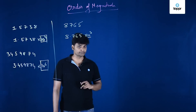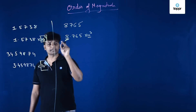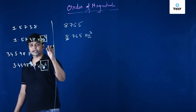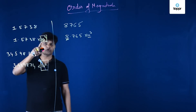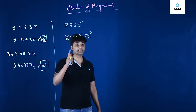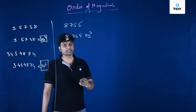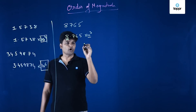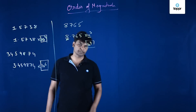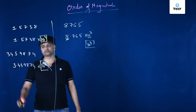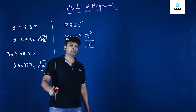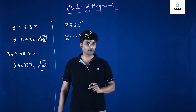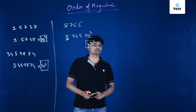If your answer is 10^3, then it is wrong. Why? Because we need to look at the leading digit. If this digit is less than 5, the order of magnitude stays the same — for instance, the digit was 1, so 10^4; the digit was 3, so 10^6. But here the digit is 8, and 8 is greater than 5. So if this digit is greater than 5, we add one more to the power. Therefore, the order of magnitude is 10^4, not 10^3.